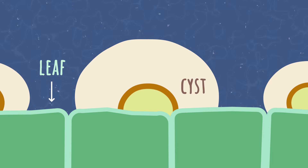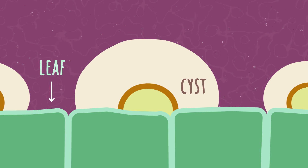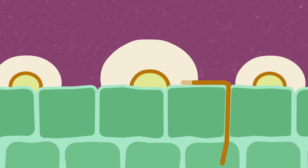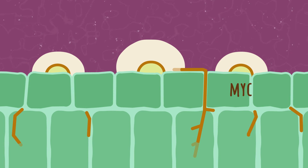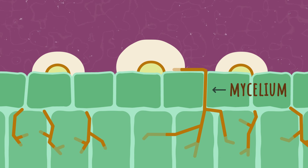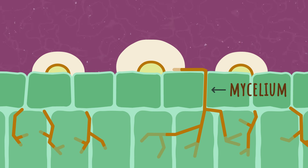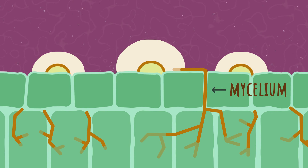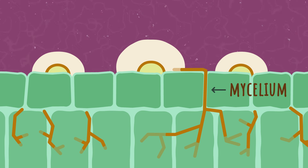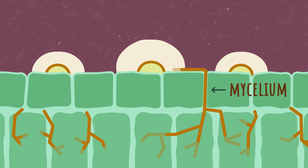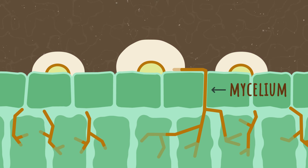Within its host, P. capsaezi extends a network of root-like structures called mycelium, which begin absorbing nutrients from the plant's cells. The plant cells remain functional at first, enabling the infection to proceed while the plant shows no visible symptoms. With time, however, the pathogen begins feeding more aggressively, killing the host's cells.